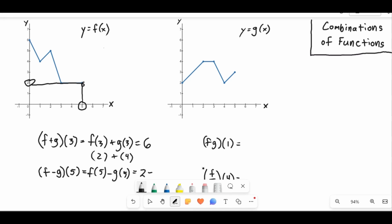So we have 2 minus, now g(5), so we'll go to 5 here, and we'll go up, and it looks like g(5) is 3. And so 2 minus 3, that's going to equal negative 1. And so f minus g of 5 is equal to negative 1.